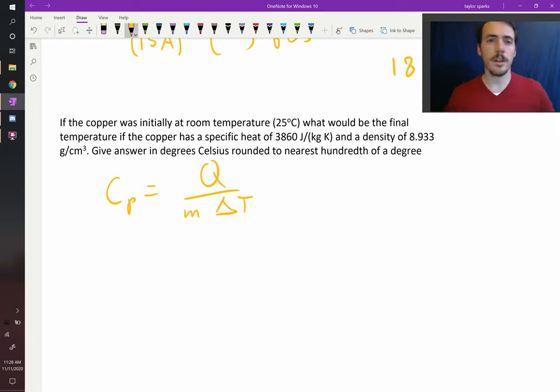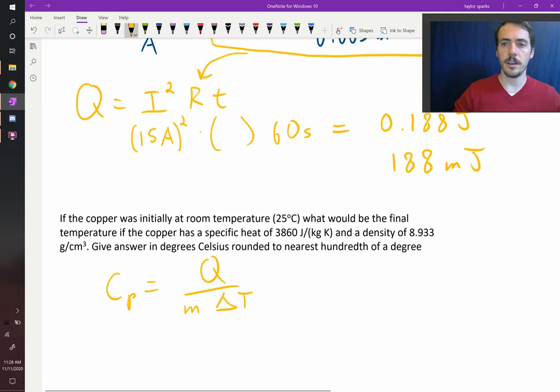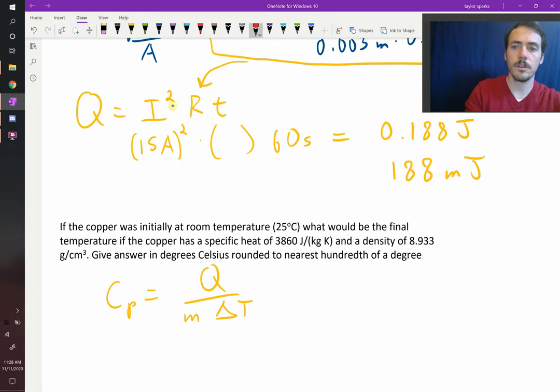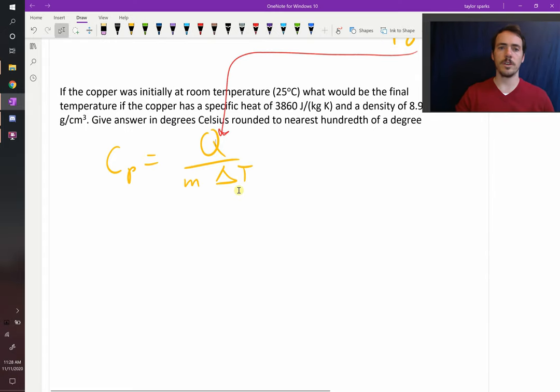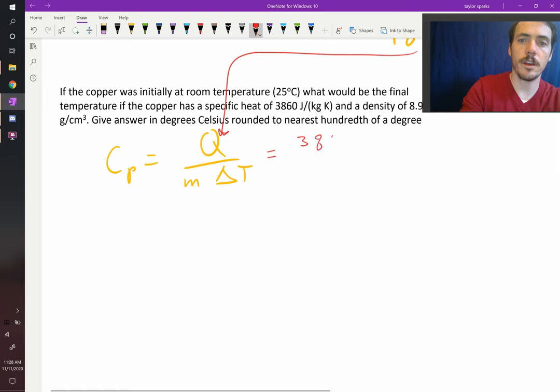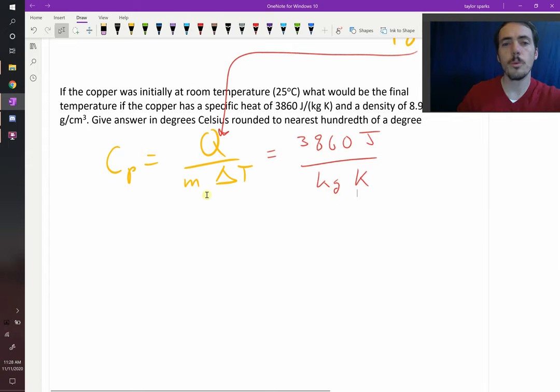From our previous chapter on thermal transport, we know how to relate heat to change in temperature. We use the heat capacity equation, where the specific heat is equal to the heat that goes into a sample divided by the mass of that sample divided by its change in temperature, delta T. So let's go ahead and plug in this 188 millijoules. That would be our Q value, the heat going into it.